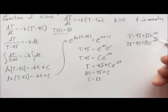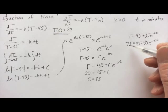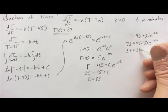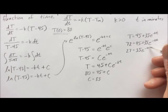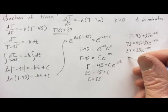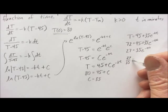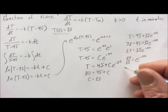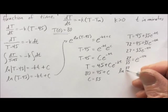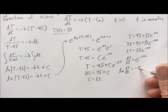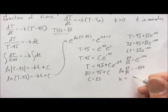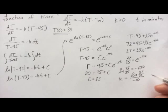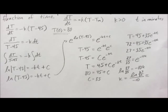We can subtract 45 from both sides. Let's see, that's going to be 32 minus 5, so that's 27 equals 35 E to the minus 10K. We'll divide both sides by 35, so 27 over 35 equals E to the minus 10K. We take the natural log of both sides to get rid of this E, so we have natural log of 27 over 35 equals negative 10K. So, K equals the natural log of 27 over 35 divided by negative 10, and let's calculate an approximation for that.